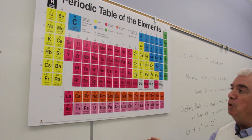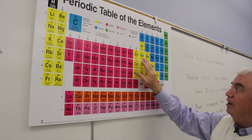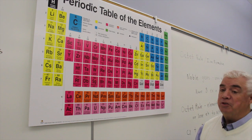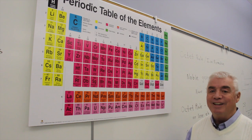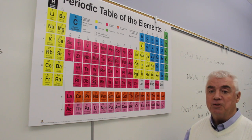So you should be able, for any element in group 1A or 2A, or these elements on the right-hand side, to identify the number of valence electrons.